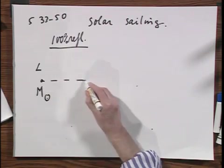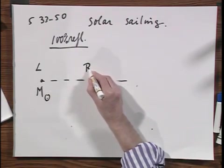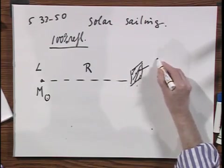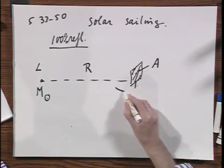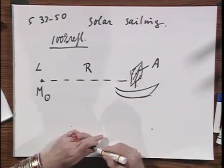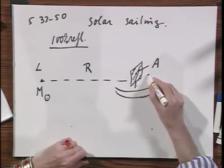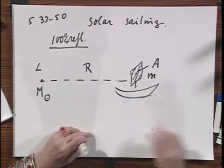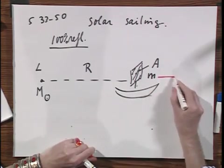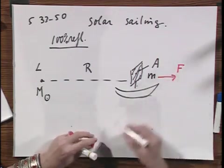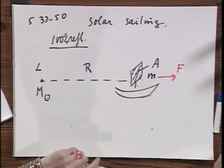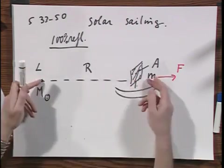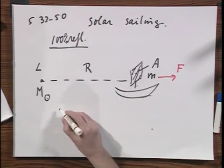And at a distance R, here is our wonderful science fiction sailboat with area A, and here is the boat. And that's the mass of the boat plus the sail, M. And we want a net force in this direction which is larger than zero. In other words, we want the radiation pressure to be larger than the gravitational pull.